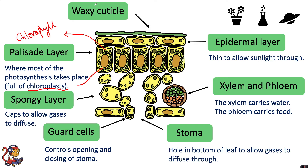The waxy cuticle on the top prevents water loss. The water taken into the plant through the xylem must not be lost by evaporation out of the top of the leaf, because we need that water for photosynthesis. So this waxy layer prevents that water from escaping and being lost.